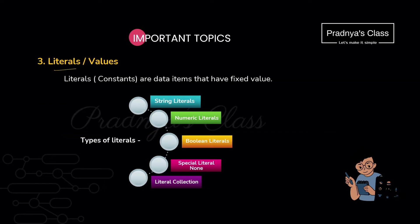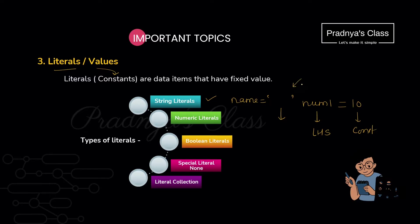The second important token is literals. Literals are nothing but constants. When we assign any value to a variable, we write the variable on the left-hand side and on the right-hand side we write literals. According to the different data types we have different literals. The first is string literal — if we assign a value like a name to a variable it is called a string literal. In Python we can enclose a string literal in single quotes or even in double quotes.